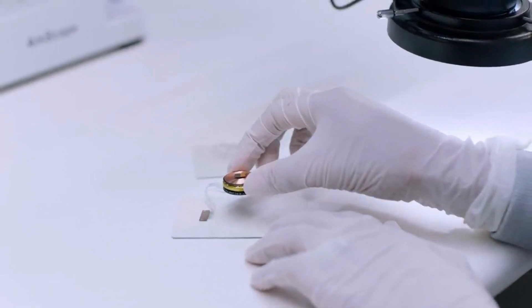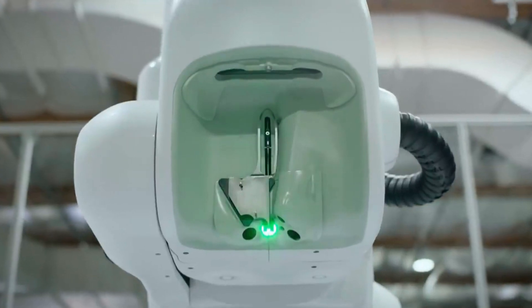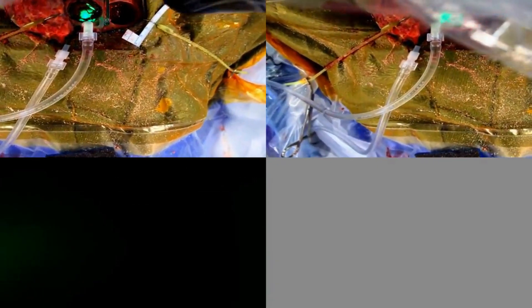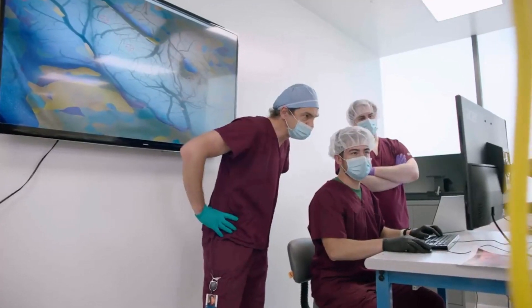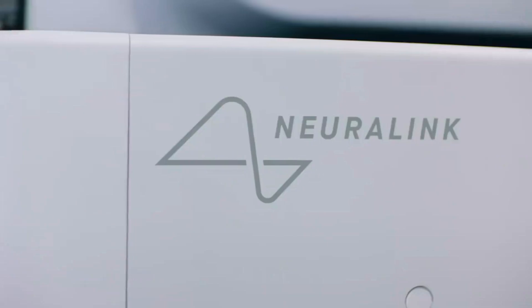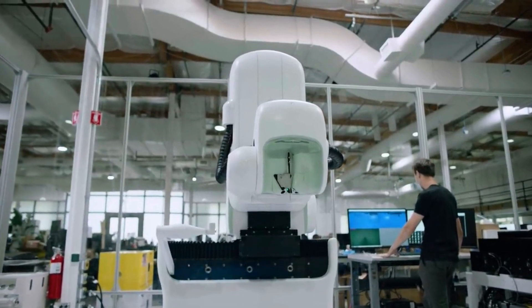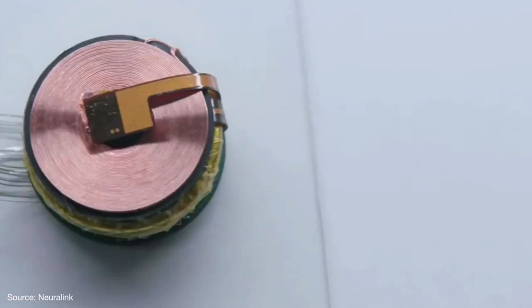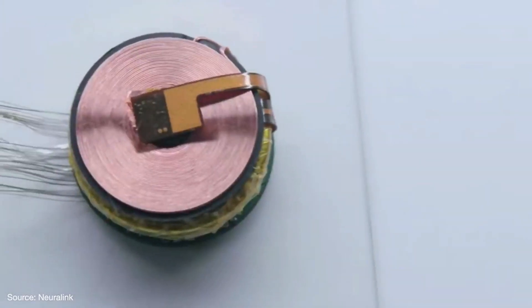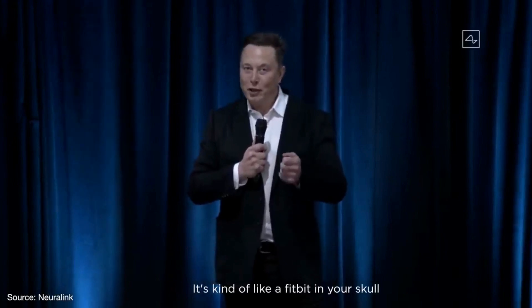But brain machine interfaces are not new. They have been used to treat various patients of Parkinson's disease, dystonia, OCD, restore hearing and even epilepsy. What Neuralink brings to the table is its improvements to the existing technology. The current state-of-the-art BMIs have almost 100 wires connecting to the brain. It's kind of like a Fitbit in your skull with tiny wires.